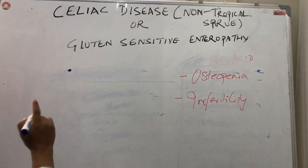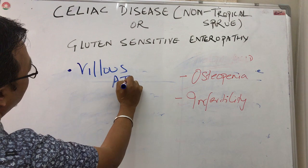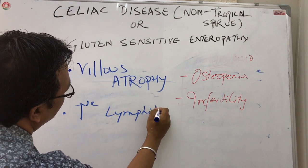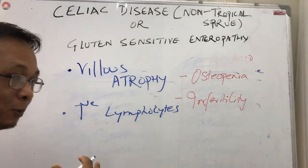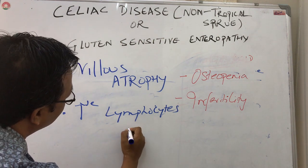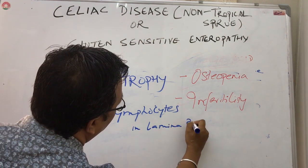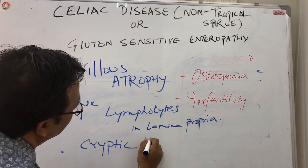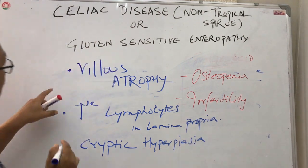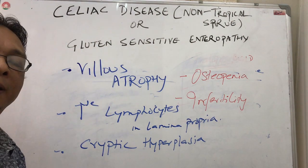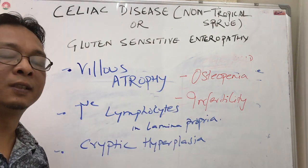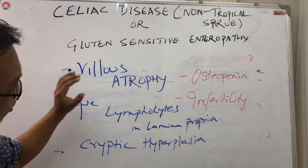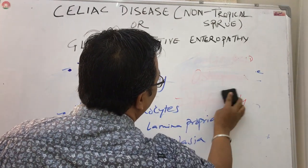There are three key findings seen on intestinal biopsy in celiac disease. Number one: villus atrophy. Number two: increased amount of lymphocytes in the lamina propria layer of the epithelial cells. Number three: crypt hyperplasia. These three things are seen on intestinal biopsy. Sometimes patients only present with osteopenia and infertility, and then on endoscopy and biopsy, villus atrophy is found.